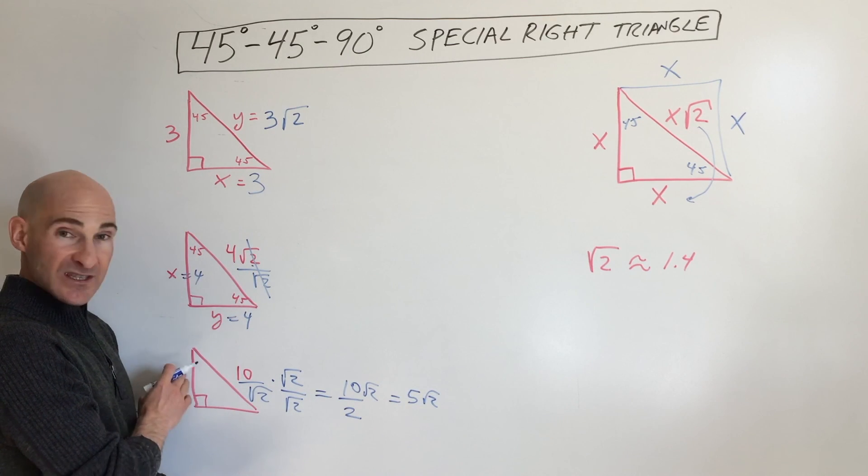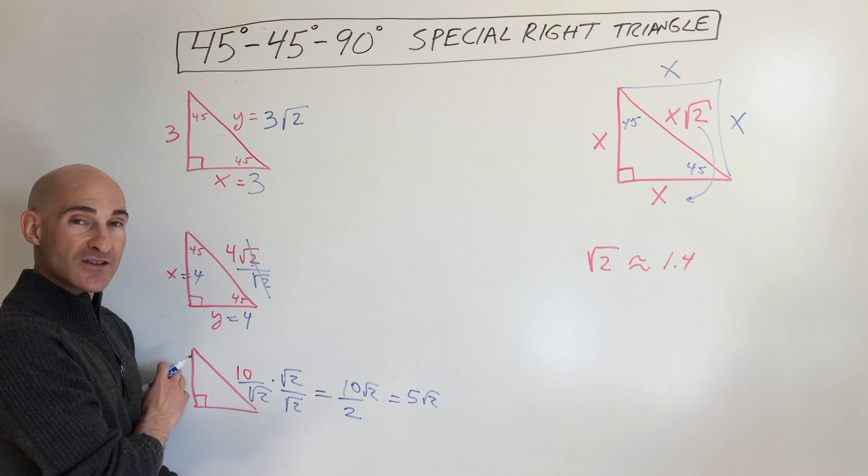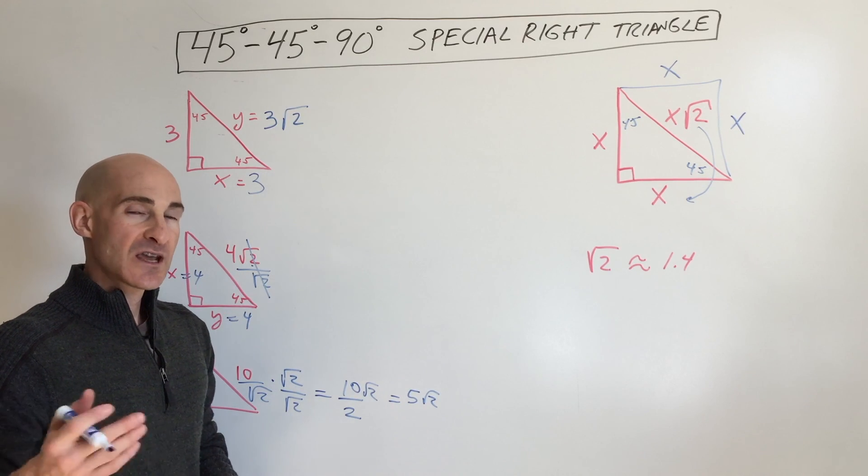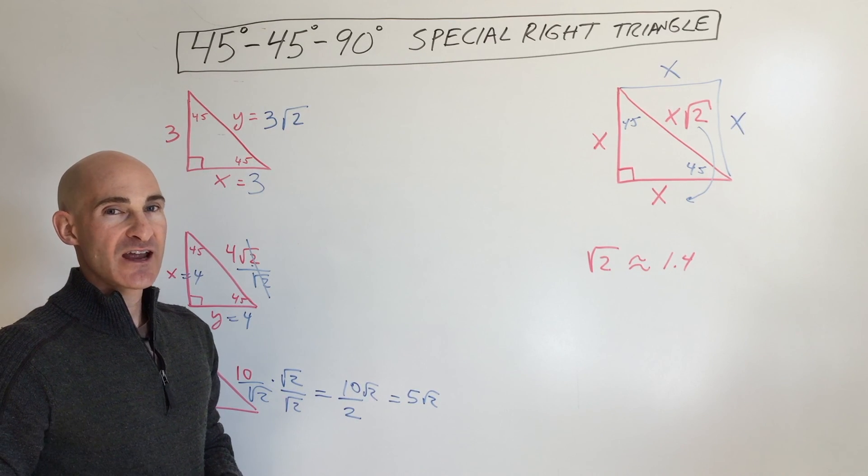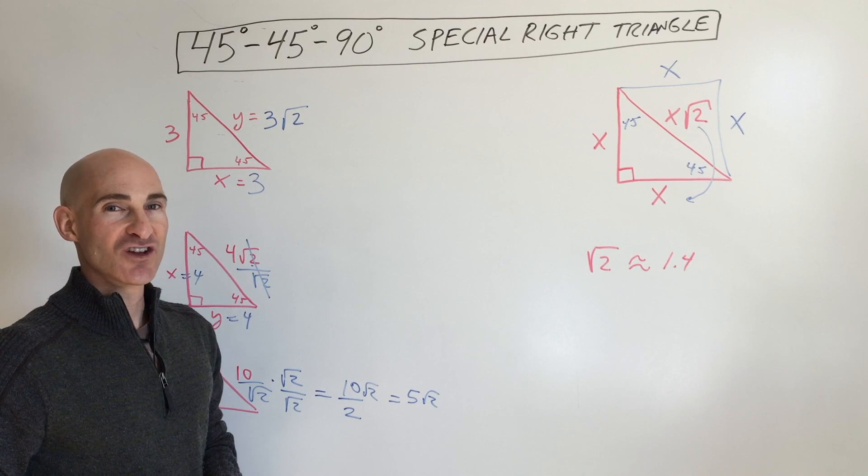And both of these legs will be the same. So 5 square root of 2, 5 square root of 2. So take a look at my other video about the 30-60-90 special right triangle. And I'll see you in the next video.